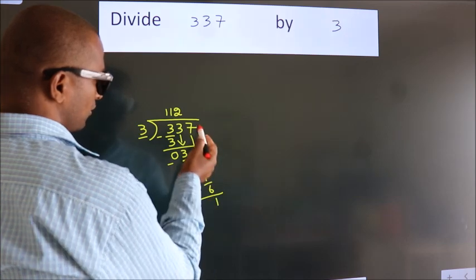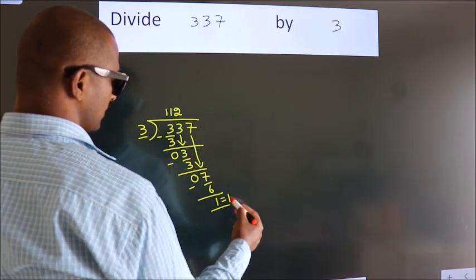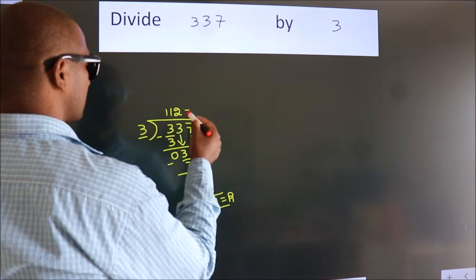After this, there are no more numbers to bring down, so we stop here. This is our remainder. This is our quotient.